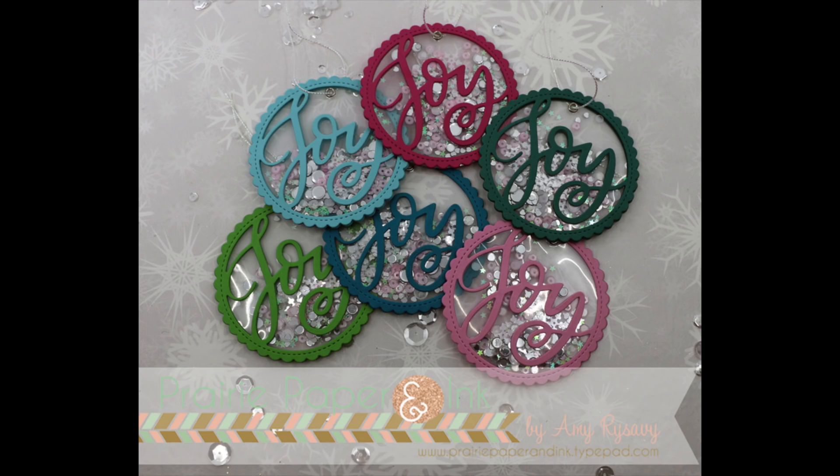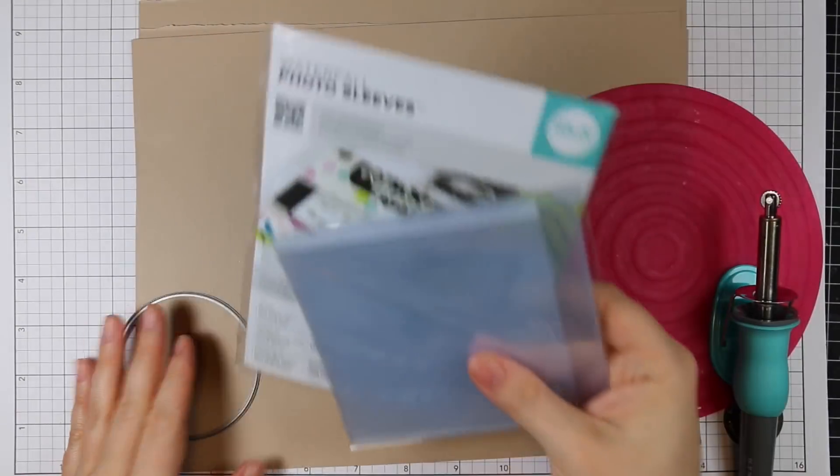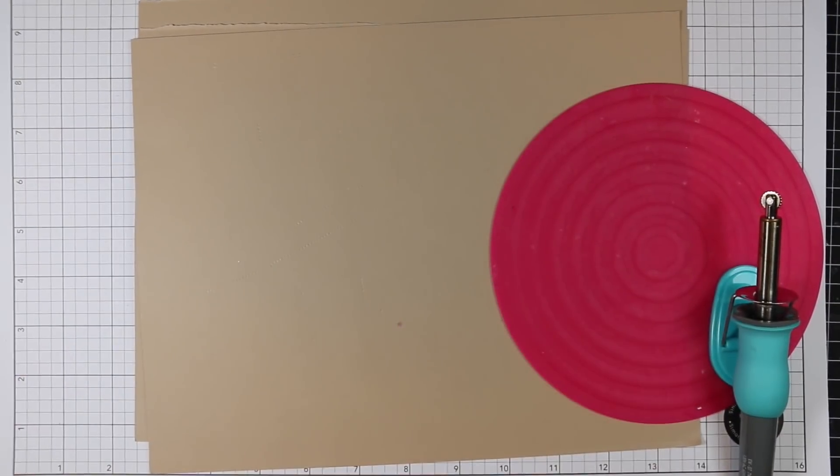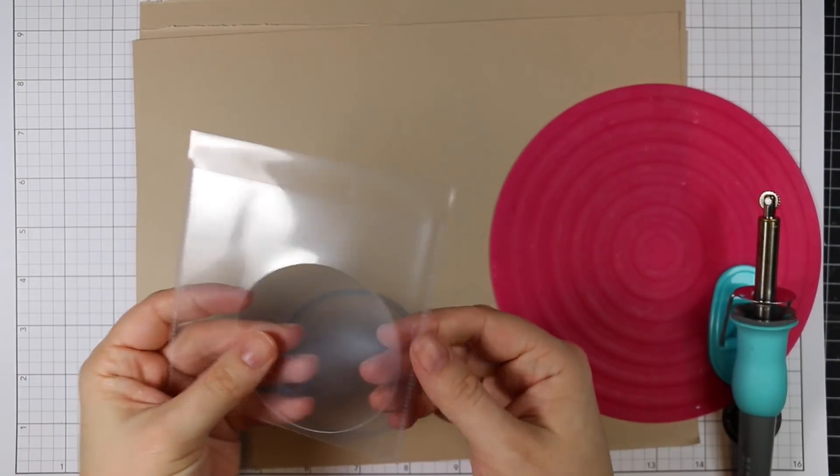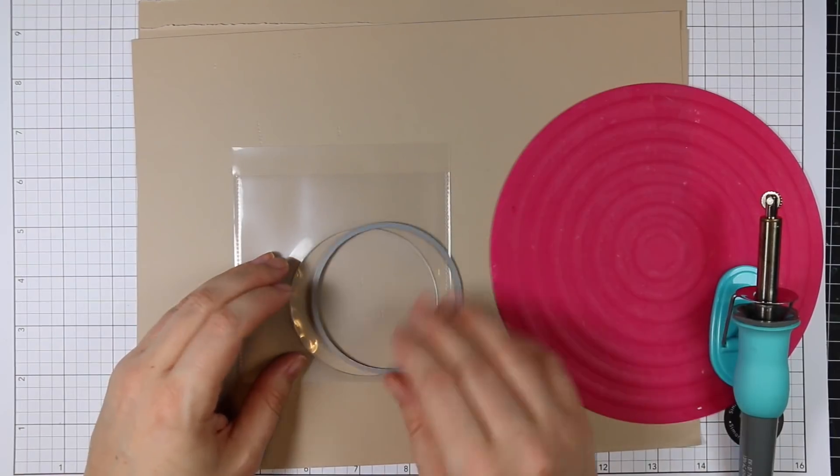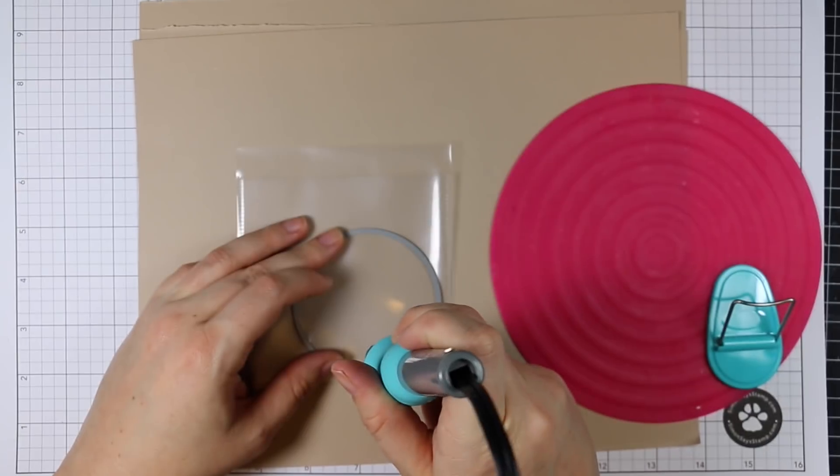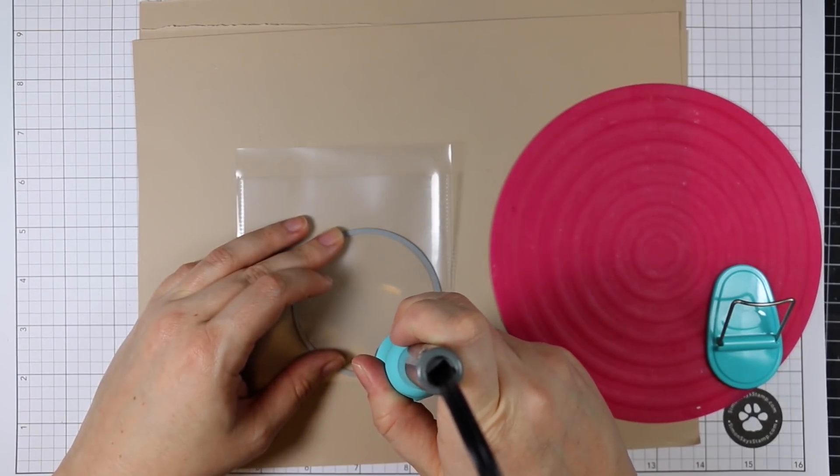Hello everyone, Amy R here with Prairie Paper and Ink and welcome to video 22B. I made a card video earlier with some Pretty Pink Posh products and when I was going through them I came across the Pretty Pink Posh Joy Shaker die.